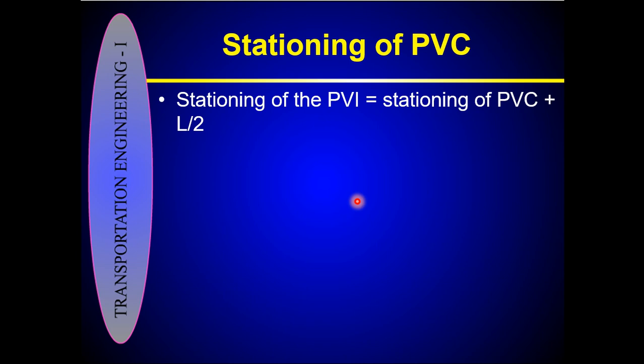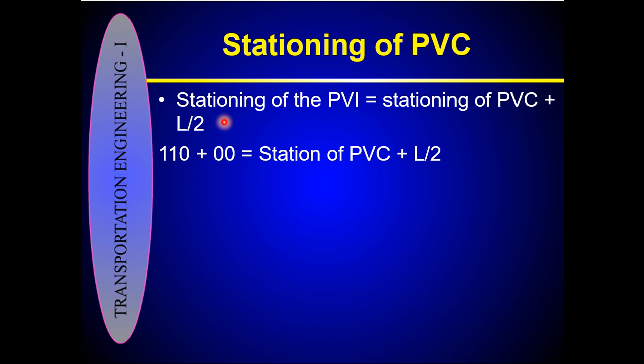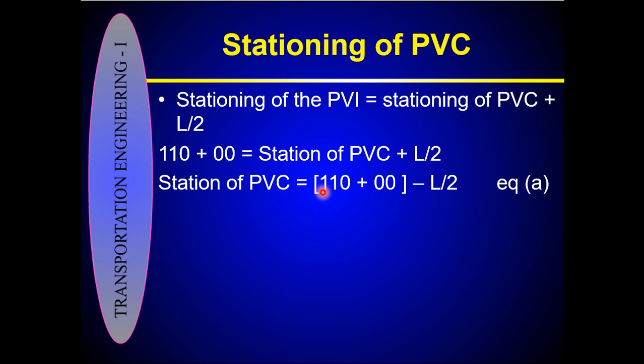The stationing of the PVI equals the stationing of the PVC plus L/2 — the same equation used in the previous example. Substituting, stationing of PVI = 1110, so the stationing of PVC = 1110 minus L/2. To calculate the PVC station, we must first find L. We can calculate L using the parabolic equation y = ax² + bx + c, but we must first identify all the parameters.